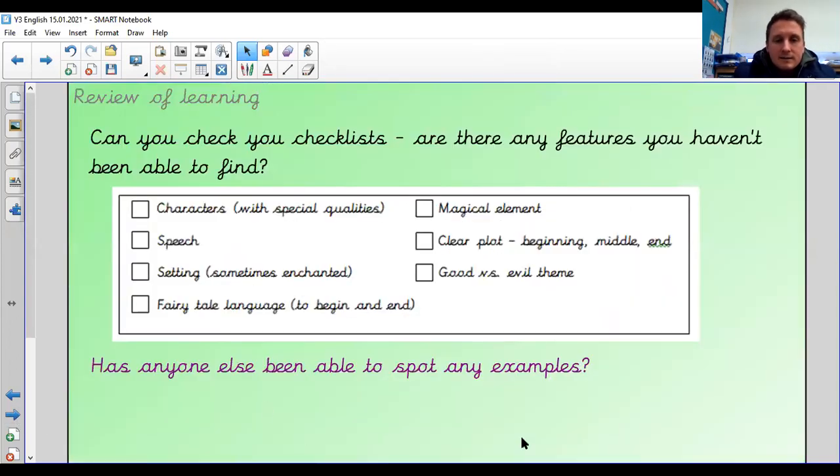At the end, so when you have finished this, I'd like you to have a look through your checklist. Are there any features that we haven't been able to find? Now it might be that you weren't able to find some of these. Okay. Have a think, do all stories have exactly the same features? And I don't suggest they do. Okay. I think there will be an example for each of these though. Okay. Going through the story, I think there will be an example for each of these. So see if you can find it please. Okay. If you have any questions, please shout and I'll be here to answer your questions on the messages. Okay.